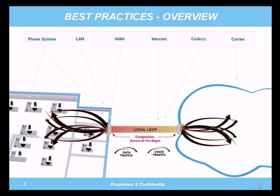Let's take a look at these best practices. One thing we're going to look at is the LAN side, which encompasses the phone system, the local network, and the wiring. We'll also take a look at the WAN side, which is really where the Internet is — Internet providers, codec choices, and the voice carrier themselves.